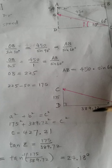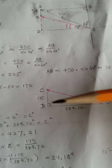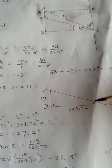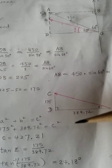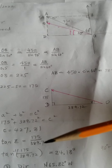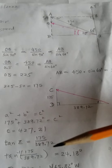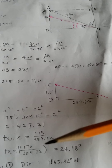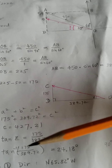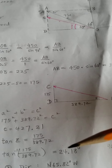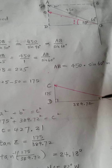Then for this angle, we need to find it using opposite over adjacent — that's tangent. Tangent of Z equals opposite over adjacent. Then you do the inverse tangent — tan to the negative 1 — and find out that's 24.18 degrees. That's this angle right here.